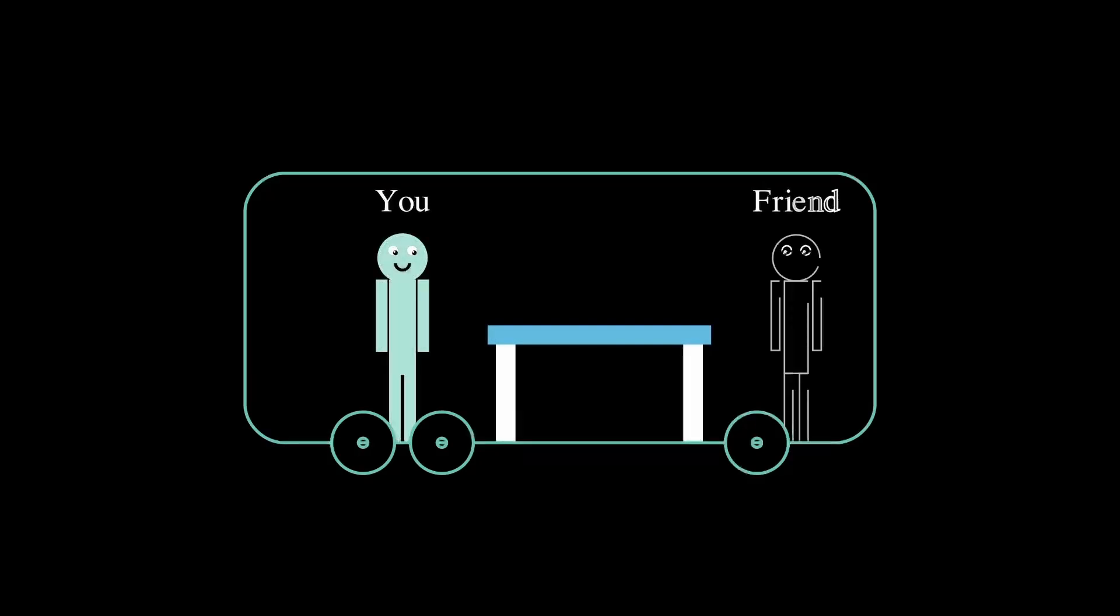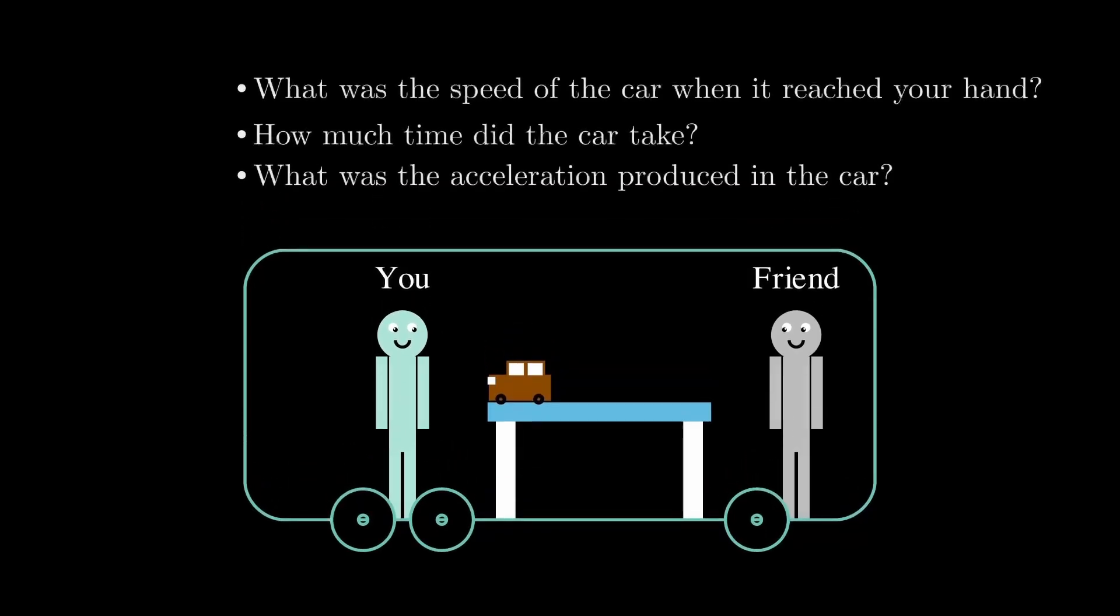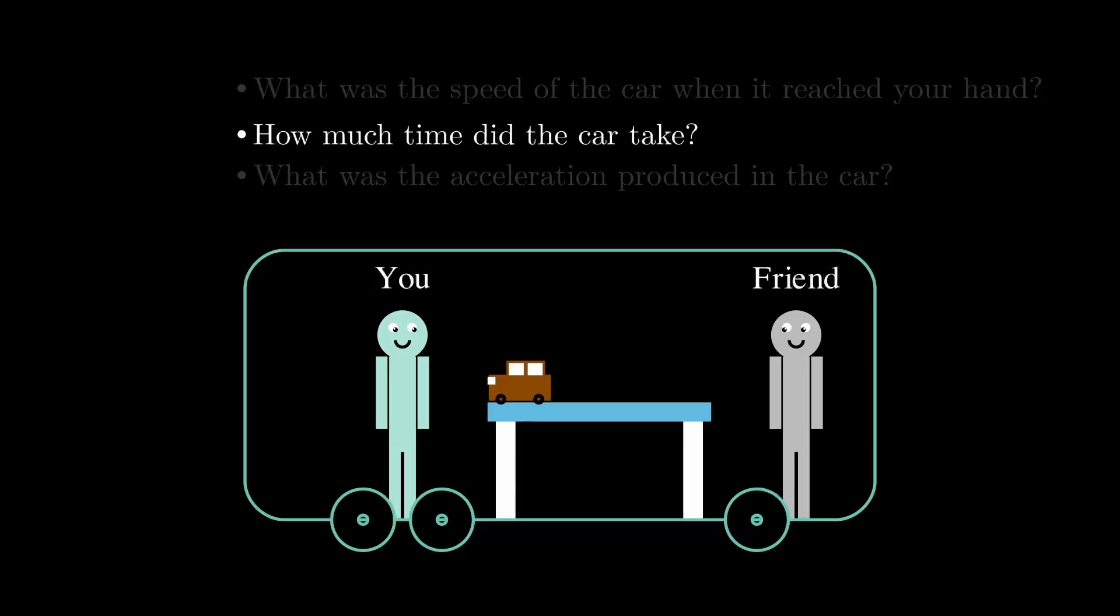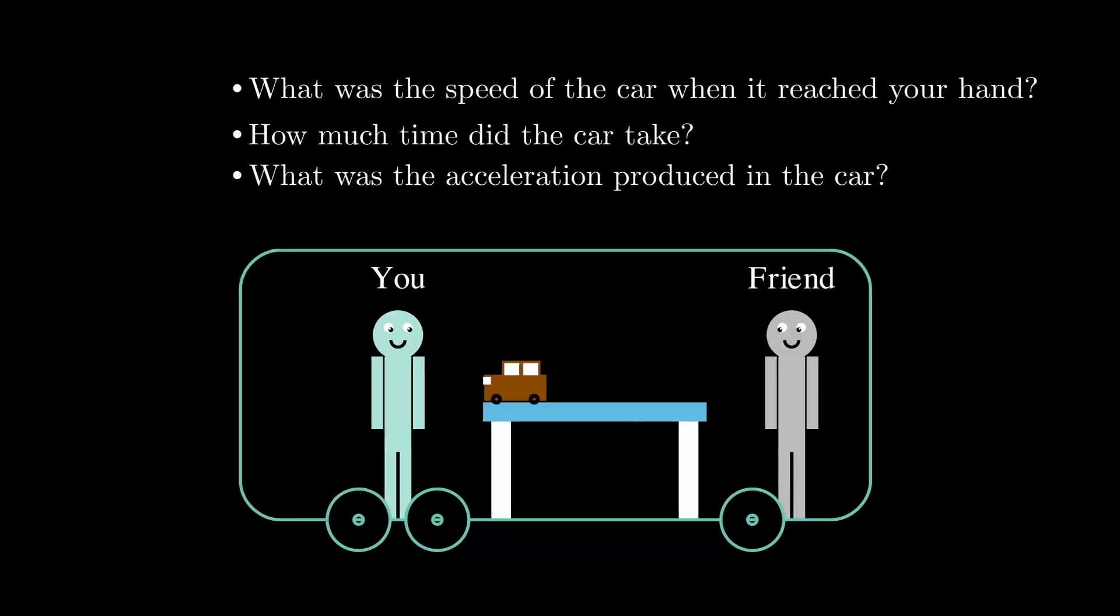One day while the bus was waiting for the students, you and your friend decided to play with the toy car on top of a table. So your friend turns on the car on one end of the table and the car goes to the other end to you. Now you being a curious mind, you think of these three questions. What was the speed of the car when it reached your hand? How much time did the car take and what was the acceleration produced in the car?